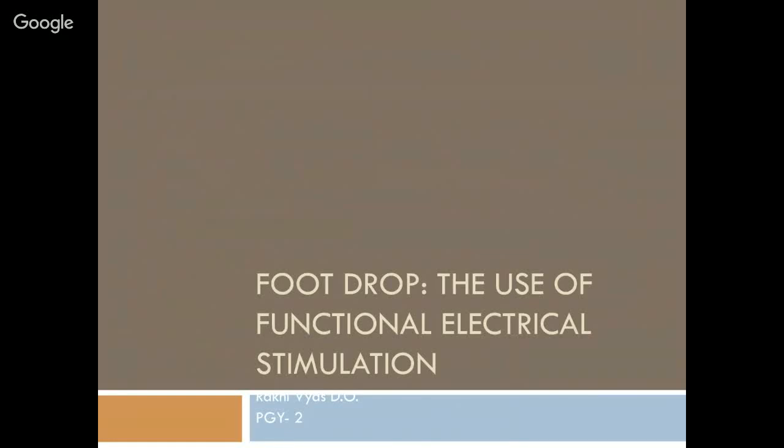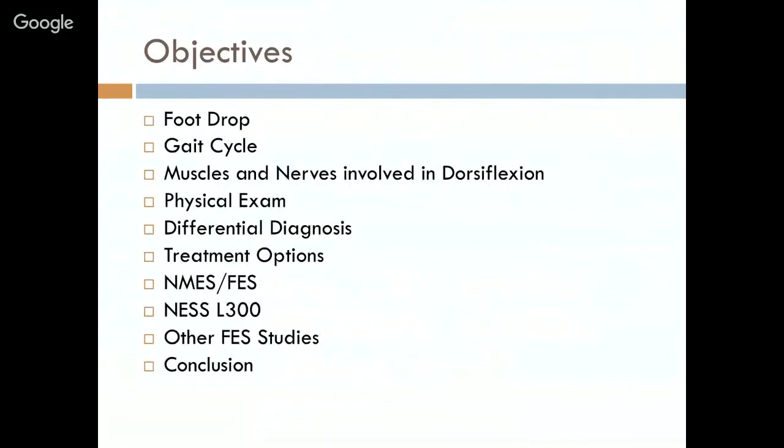Electrical stimulation in patients with foot drop. The objectives for this presentation include discussing foot drop, the gait cycle — since foot drop is a pathological gait — the muscles and nerves involved in dorsiflexion, physical exam findings, differential diagnosis, and treatment options. The focus will then shift to neuromuscular electrical stimulation and functional electrical stimulation, particularly the Ness L300 system, other foot drop systems, relevant studies, and a conclusion.